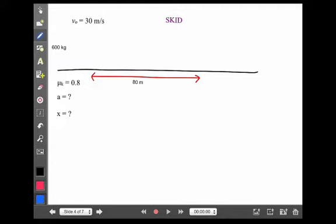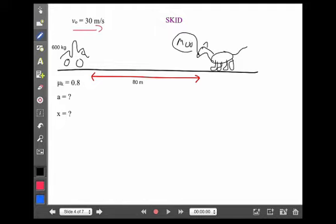The idea of a skid - here's our scenario. Let's say you're driving down the road in your 600-kilogram car at a speed of 30 meters per second, about 65 miles an hour. When out in the road in front of you, 80 meters ahead, walks a cow.